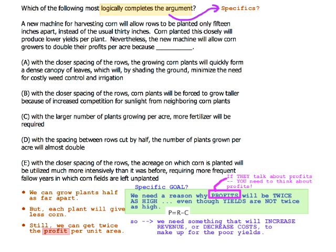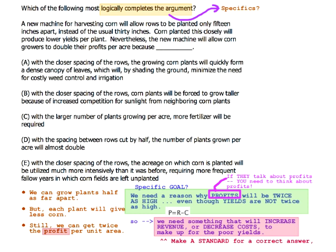Notice we haven't even touched the answer choices yet. This is what you should do in pretty much all of these problems — you should make a standard for a correct answer before looking at the choices. These shouldn't be processes of elimination at first; that's a very bad way of going about this. You should look for something, and there will be one choice that does that and other choices that don't.